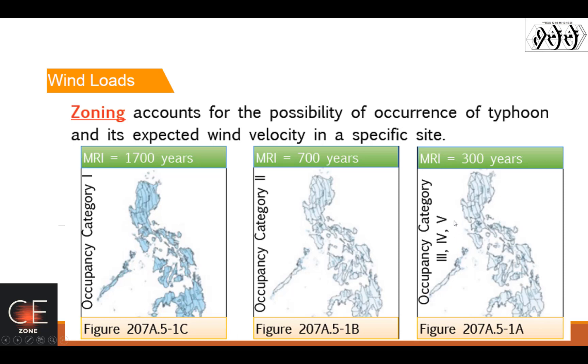For this Occupancy Category 3, 4, 5, the mean recurrence interval is 300 years.